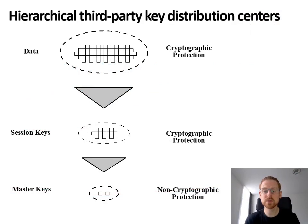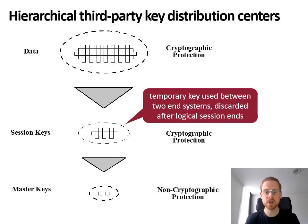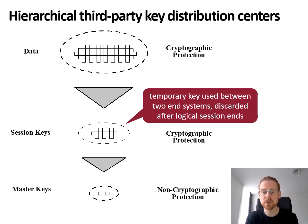A key distribution center manages encryption keys in a hierarchical way where at least two levels are used. First, you have session keys. Session keys are temporary and they are used between two end systems to encrypt some logical session. A session could for example be a TCP connection. When the TCP connection is set up, the session key comes into use, and when the session is stopped, the key is discarded. So they are used for short periods of time.